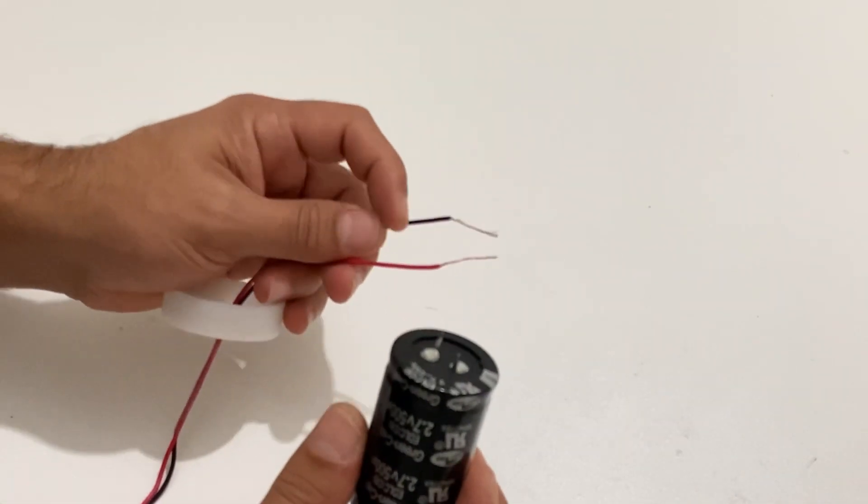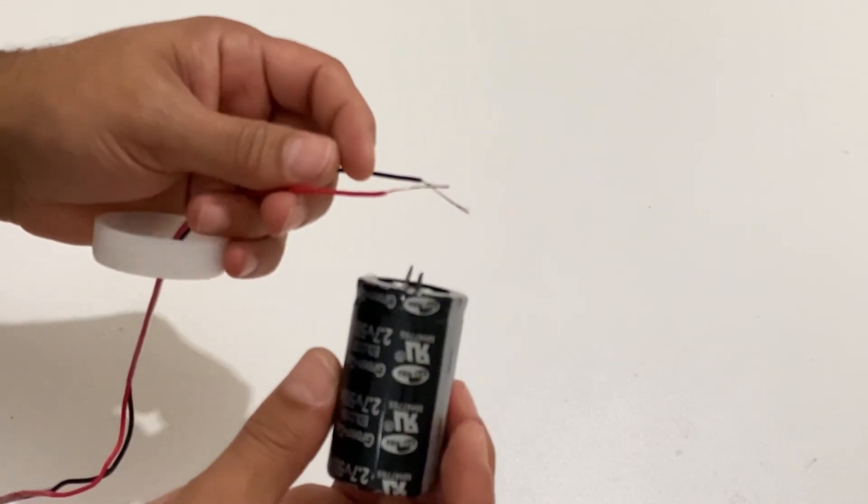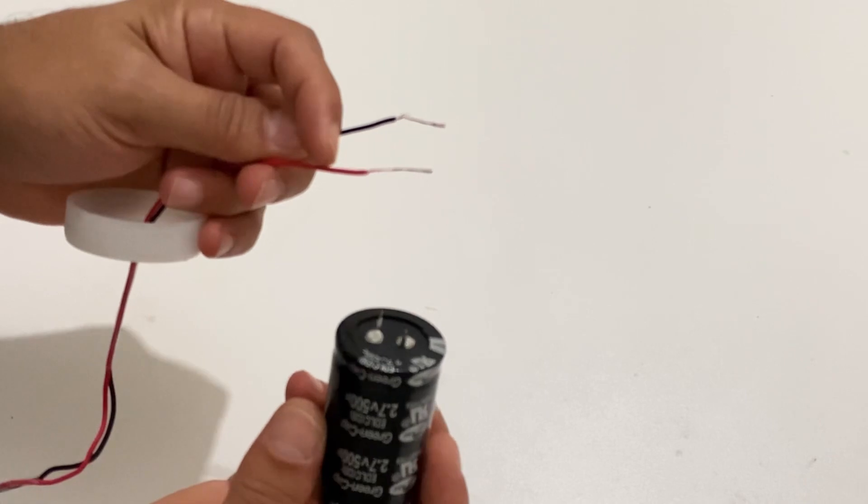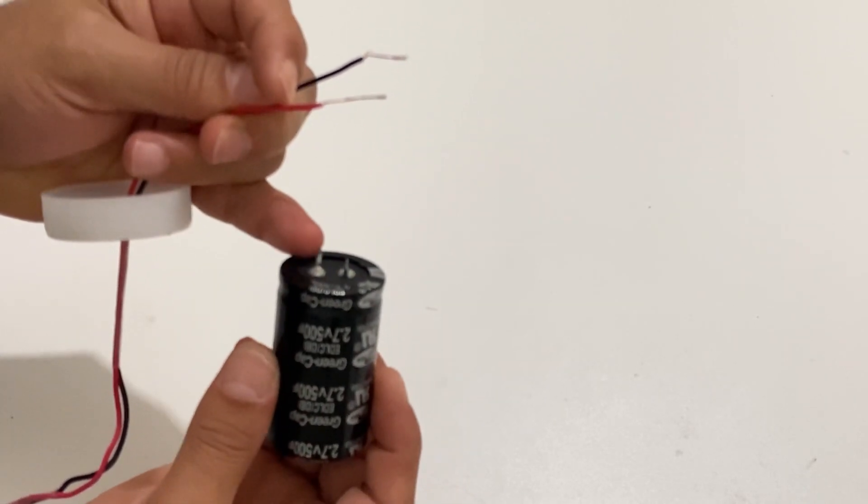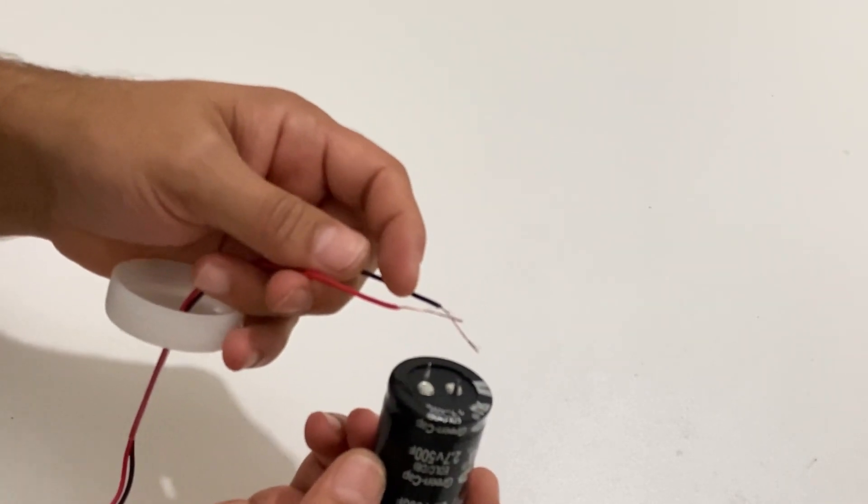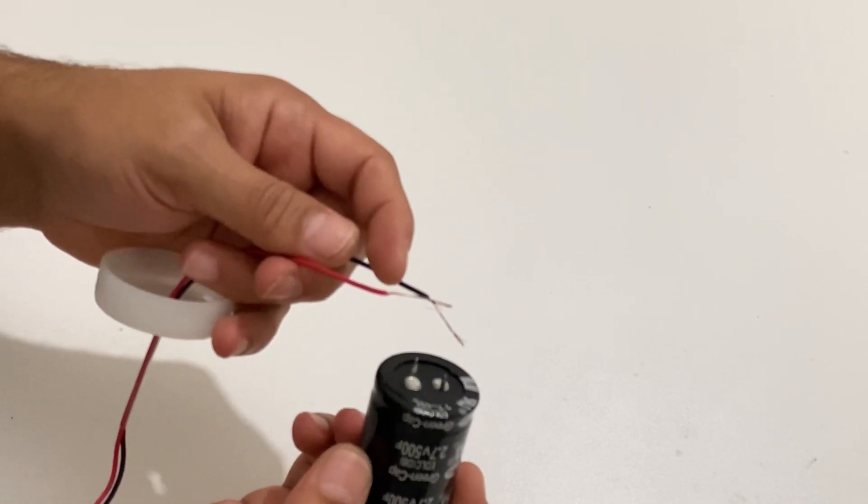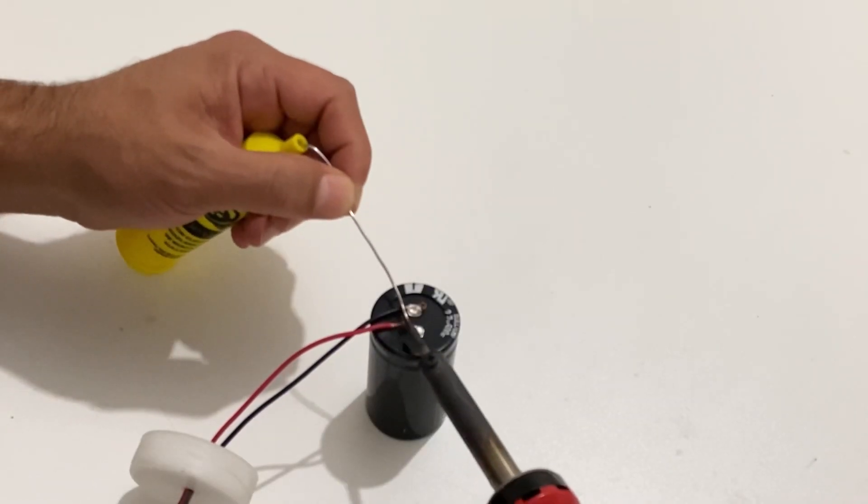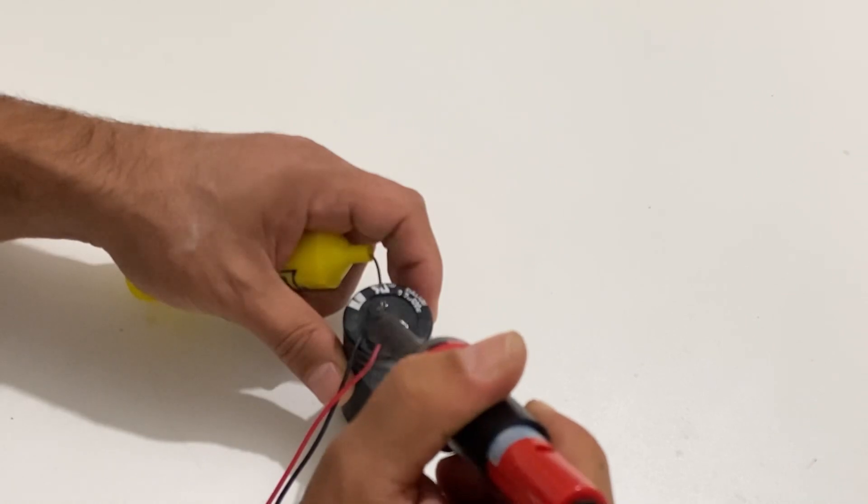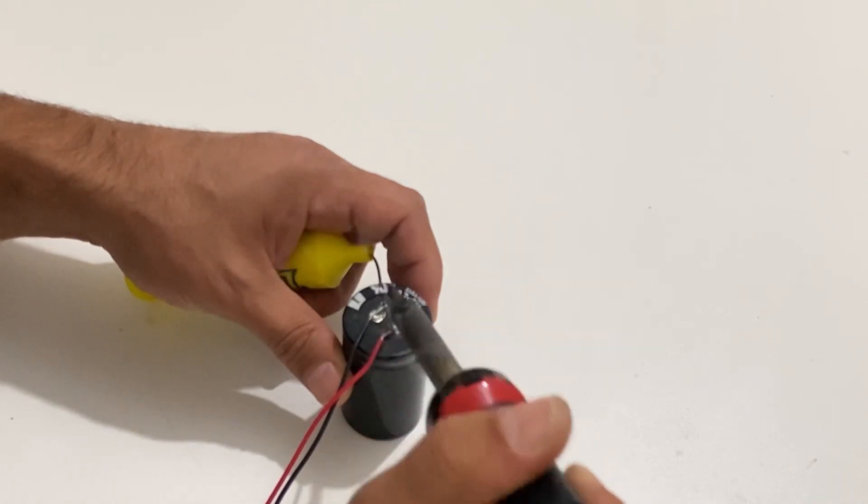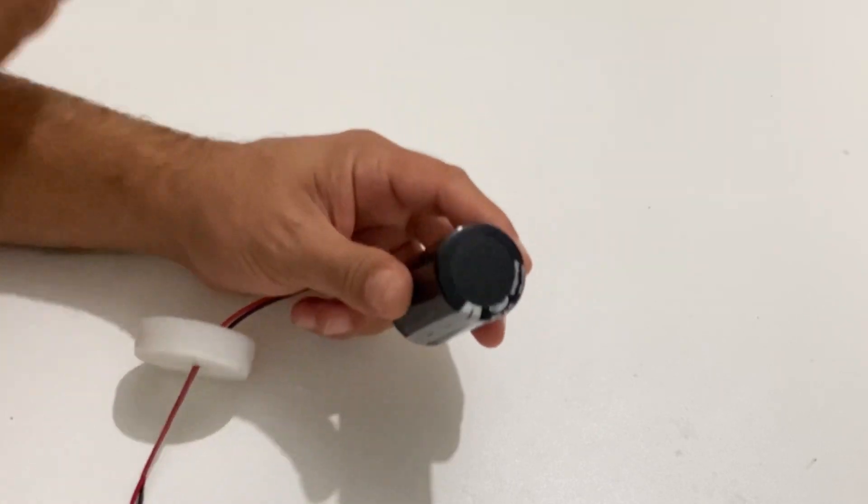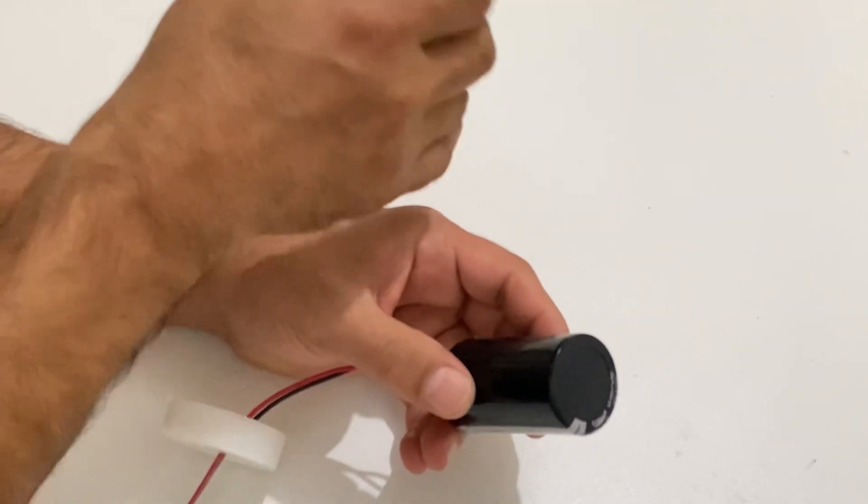Now I'm going to connect the cables to the supercapacitor. The red cable will be at the positive pole and the black cable will be on the negative pole. Now I'm going to use my hot glue and I will put the supercapacitor into the white tube.